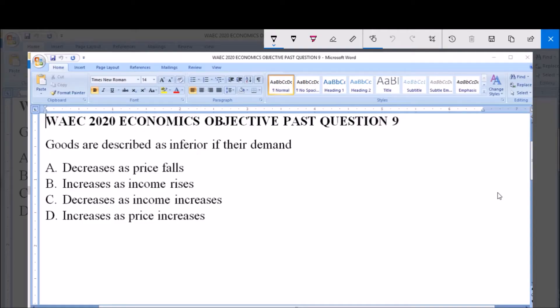Hello and welcome. I will be answering WAEC 2020 Economics Objective Past Question 9. Goods are described as inferior if their demand: A. decreases as price falls, B. increases as income rises, C. decreases as income increases, D. increases as price increases.